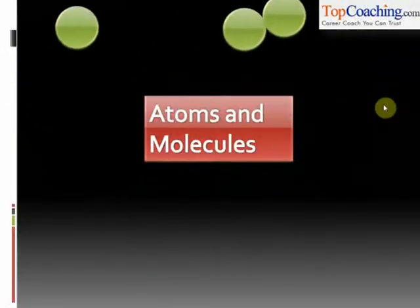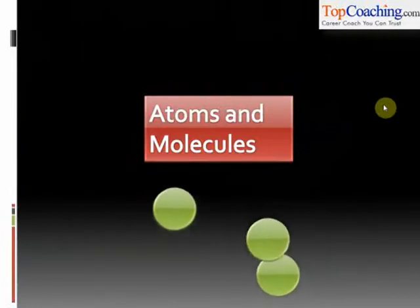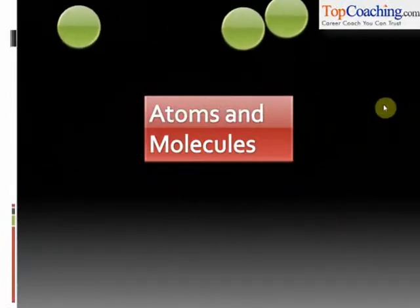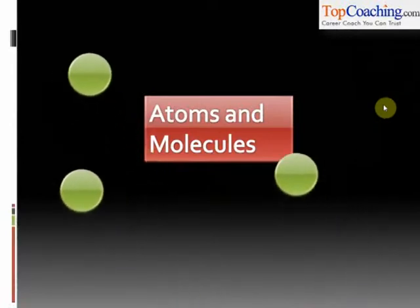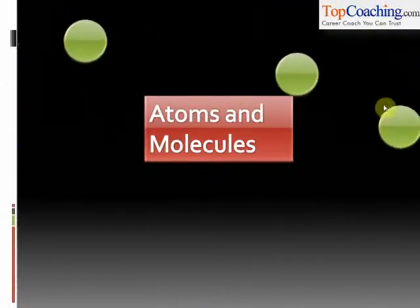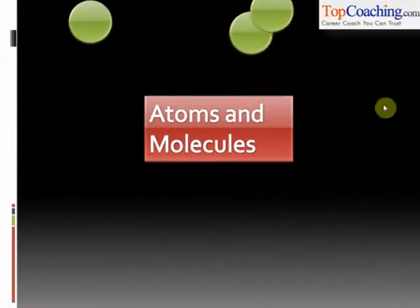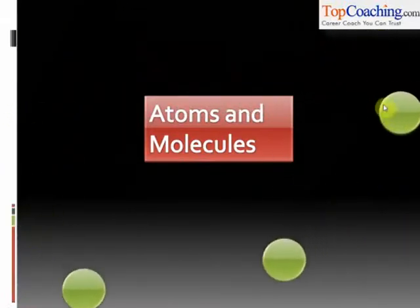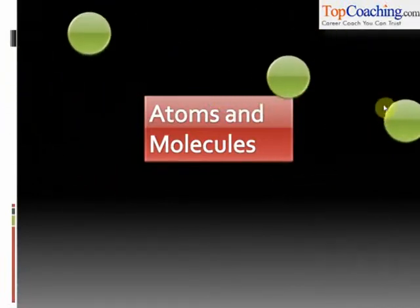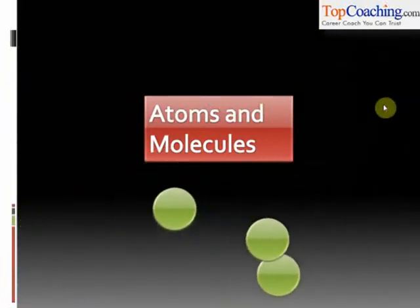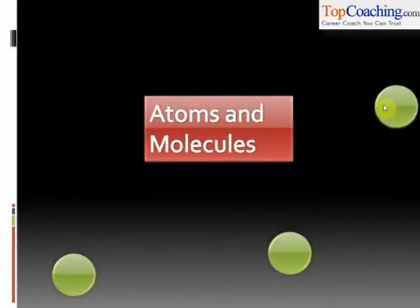Hi students, this chapter is called Atoms and Molecules. As you must have heard, all substances on this earth are made up of tiny atoms and molecules. We will learn a lot more about them in this chapter — what exactly a molecule is, what different atomic theories say, what Dalton's atomic laws are, what a mole is, and so many other interesting things. Let's proceed with atoms and molecules.